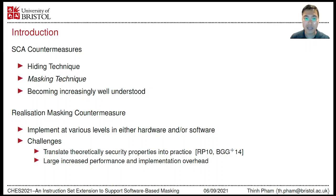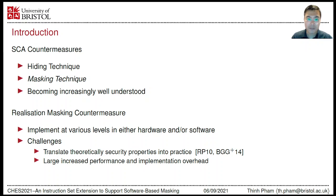Masking and hiding are two widely used countermeasures against SCA. Hiding countermeasures try to reduce the signal-to-noise ratio of leaking information. Masking countermeasures, which are our focus, mask sensitive information with random values unknown to attackers. They can be viewed as a low-level analysis of computing on encrypted data concepts. For example, first-order masking could resist first-order attacks but is vulnerable to second-order attacks, which can in turn be mitigated by second-order masking. Masking can be utilized at various levels in either hardware and/or software.